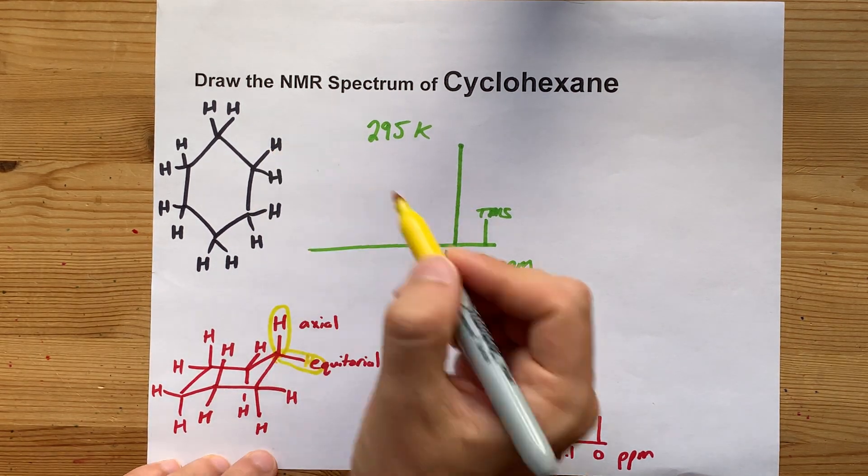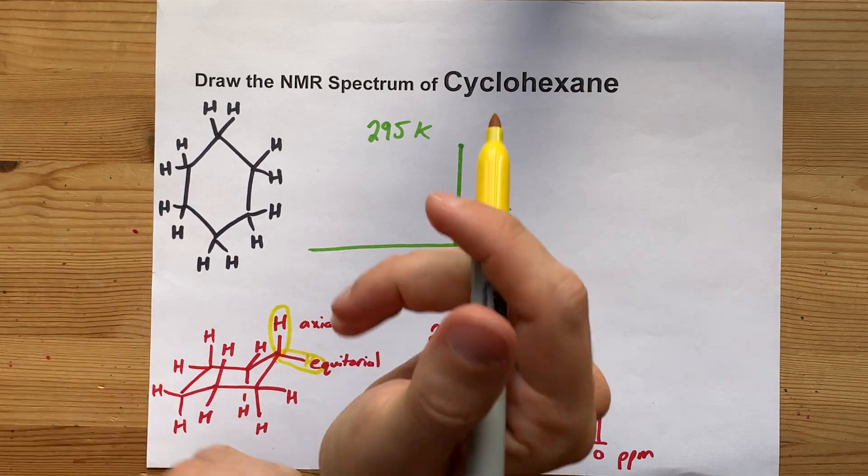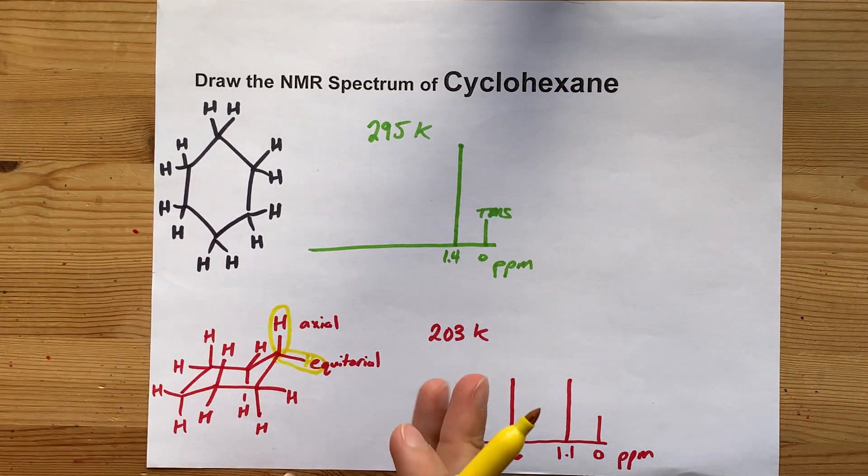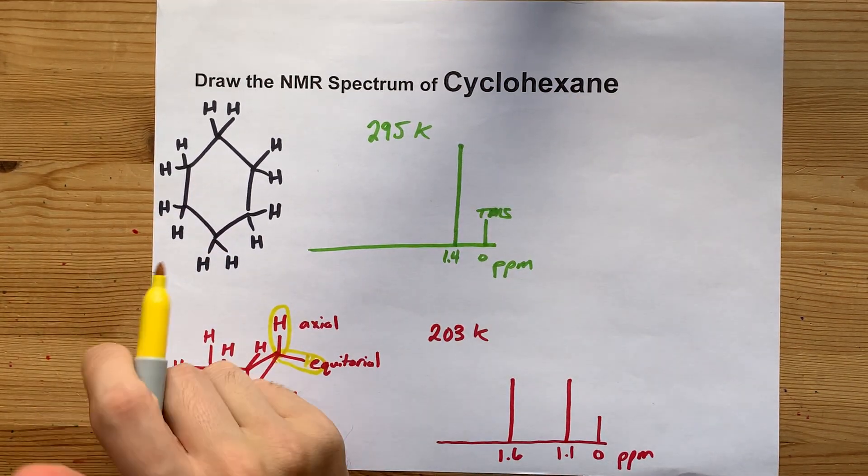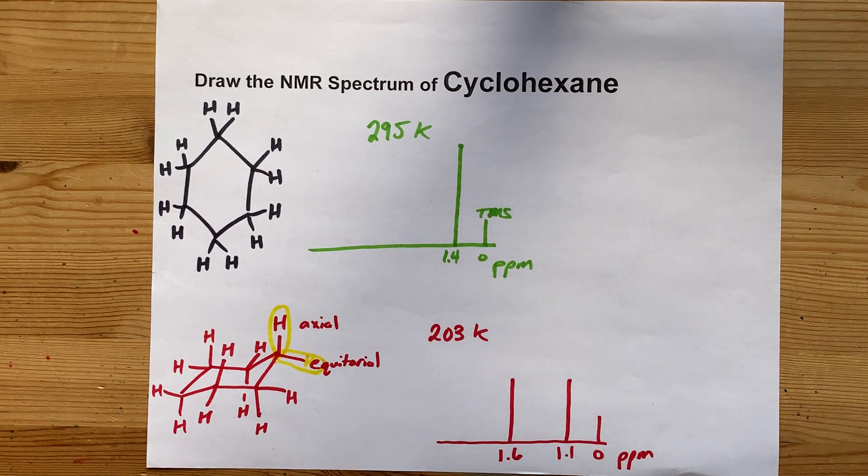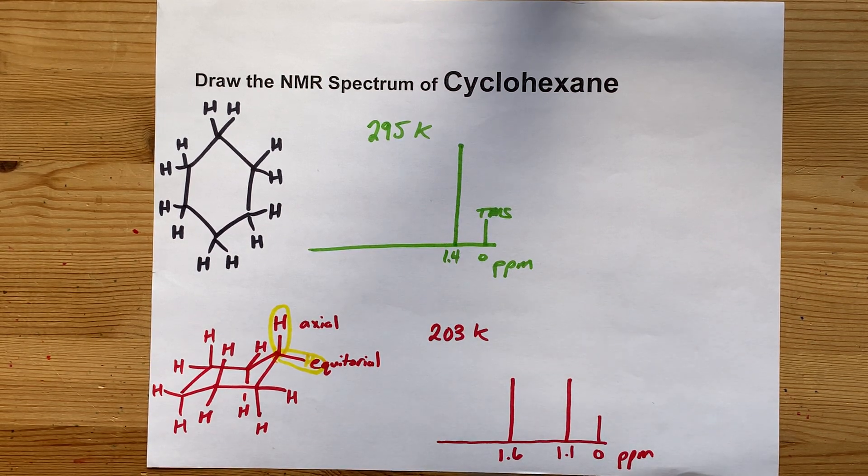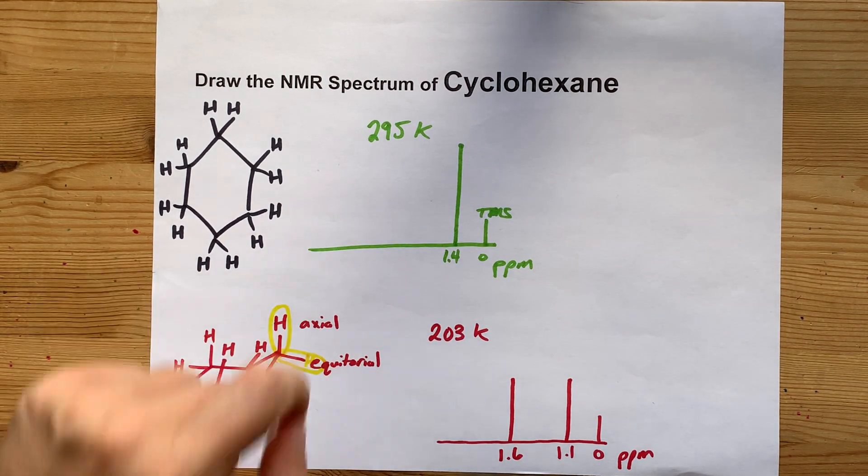What's happening here at a higher temperature is that the conformation is flipping so quickly that on the scale of NMR, you end up seeing an average between the two. Cool. Thanks for being with me and best of luck.